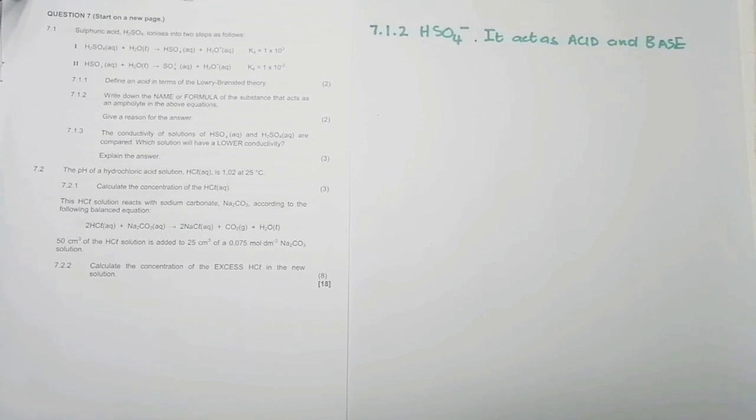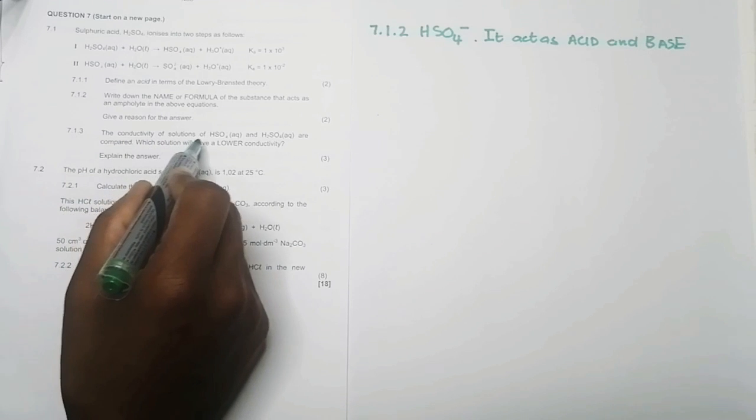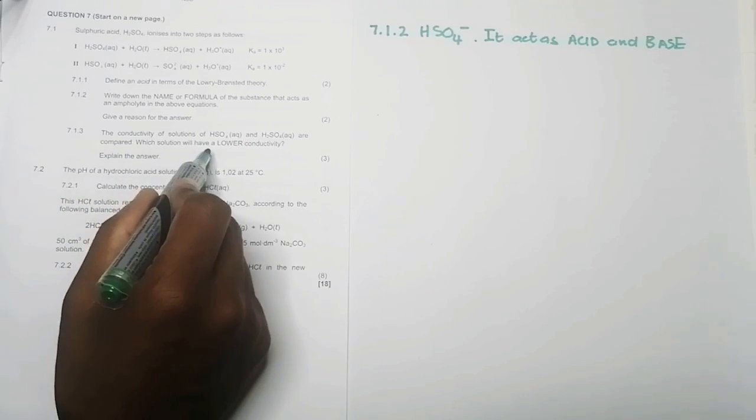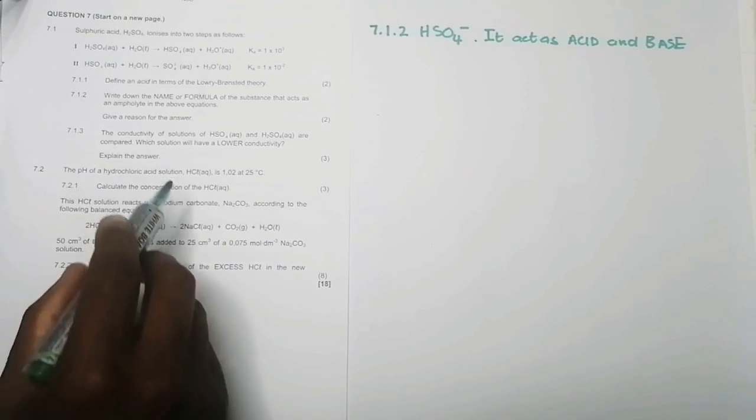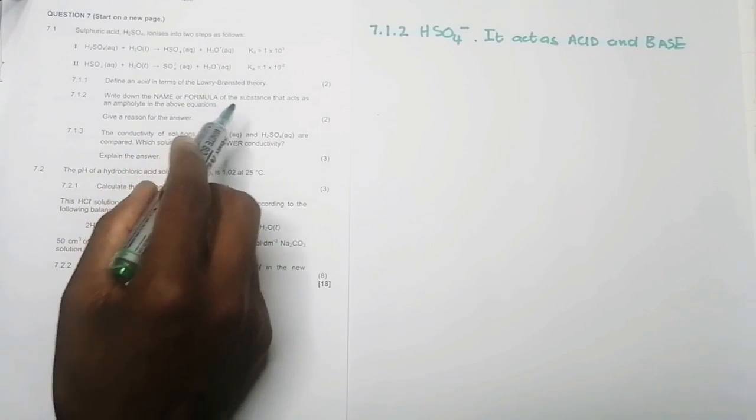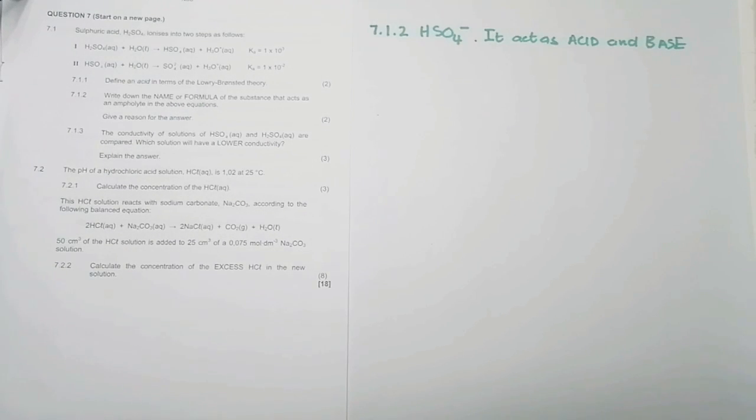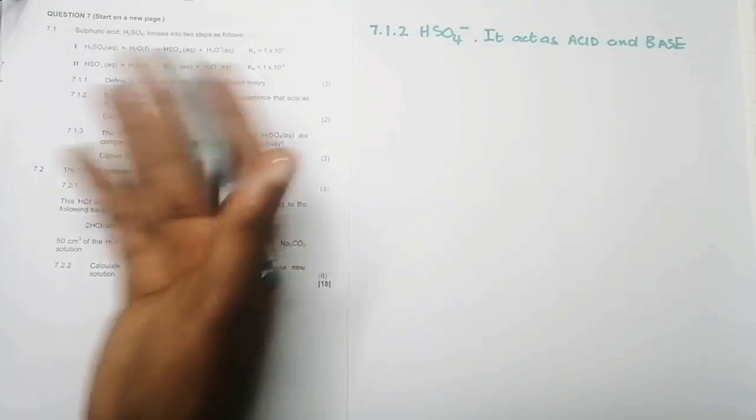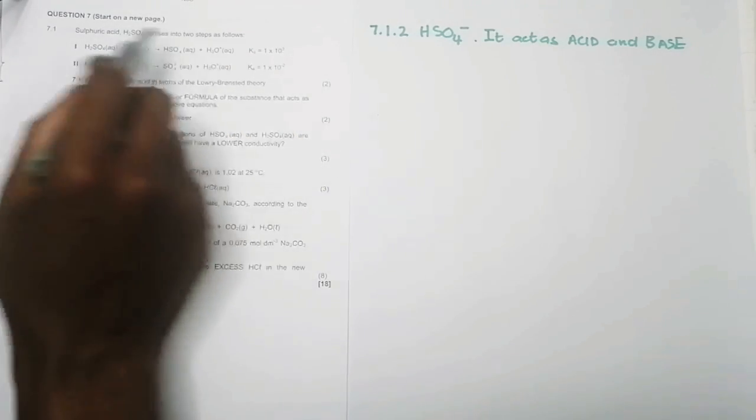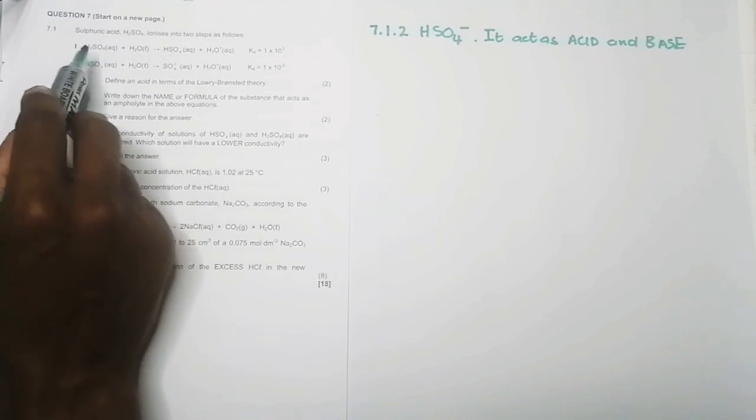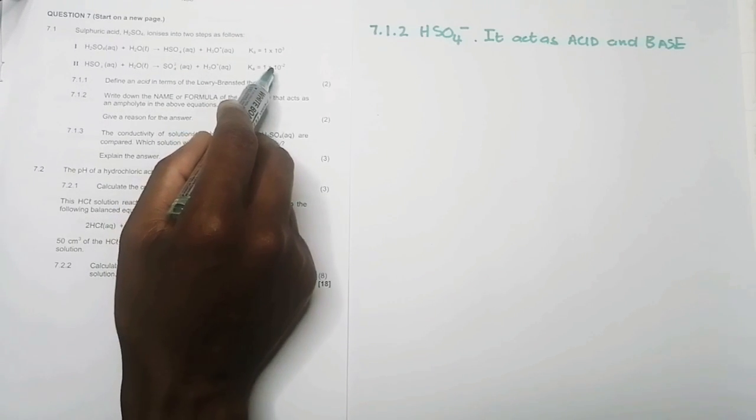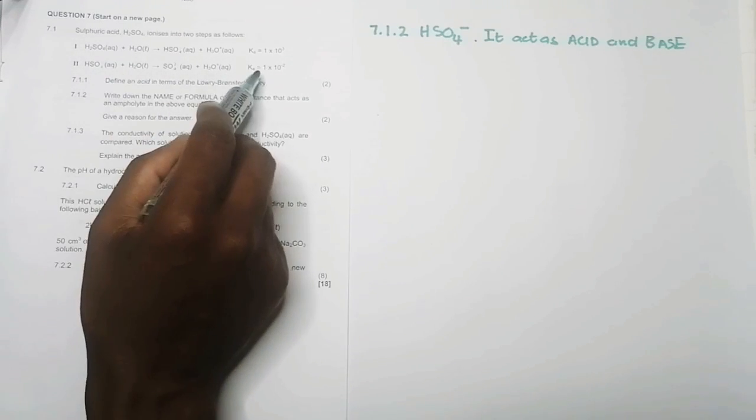So basically, they wanted you to state whether you understand what an ampholyte is. So it acts as both an acid and a base. And I think it was incorrect for them to actually give you single arrows there, but nonetheless, it is what it is. All right. So 7.1.3, they say the conductivity of solutions HSO4 minus and H2SO4 are compared, which solution will give a lower conductivity. Now, what we would do to check that conductivity, you can look at the Ka value. This is what we call the ionization constant. Now, think about KC. So this tells you this KC is actually 1000. So it's telling you actually it's going by the droves to favor the forward reaction. So there's a large ionization of this here.